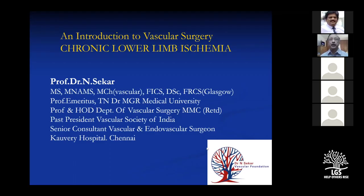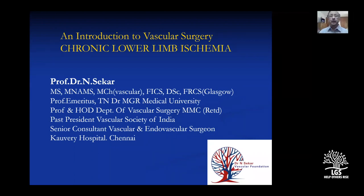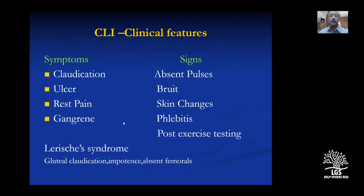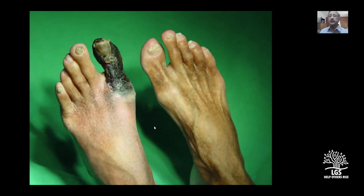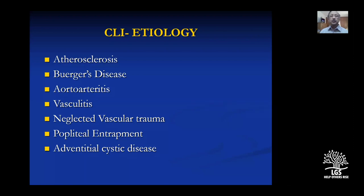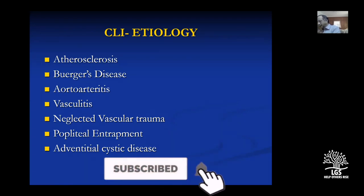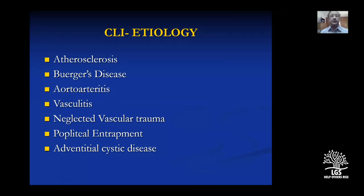This is an introduction to vascular surgery on arterial disease involving the lower limbs, one of the common problems you will face in the surgical OPD. Seeing a patient walk in with toe gangrene is common, but we should be able to pick it up even before the patient develops gangrene. Let's look at the etiology of chronic lower limb ischemia.